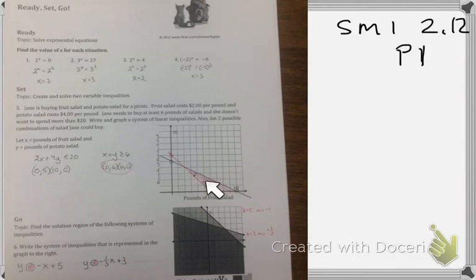Now what I needed to do is find the area below the black line and above the red line. And that ended up to be this little region right here. So any of the points inside this little region would make the equation true.